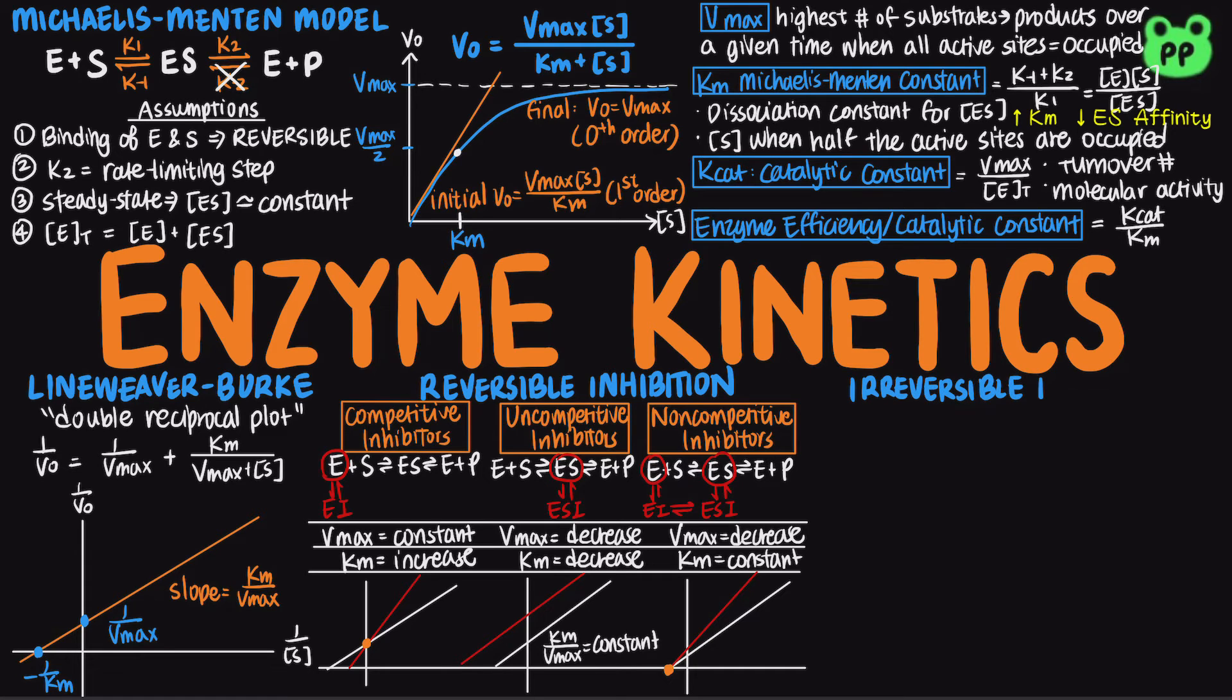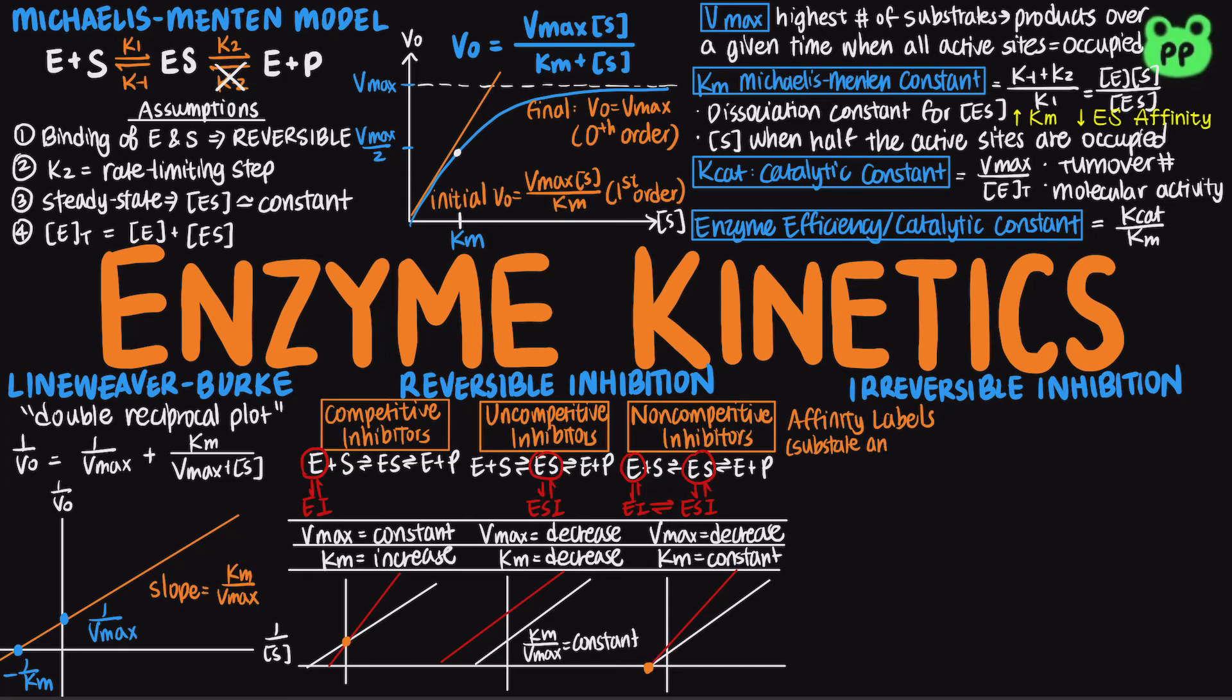There are three main types of irreversible inhibitors as well. Affinity labels are substrate analogs that irreversibly bind to one or more amino acids at the active site to inhibit the enzyme. They can be used to identify amino acids located in the enzyme active site.